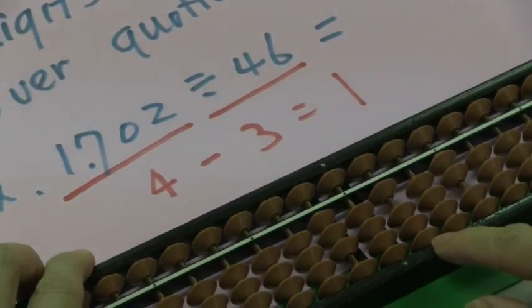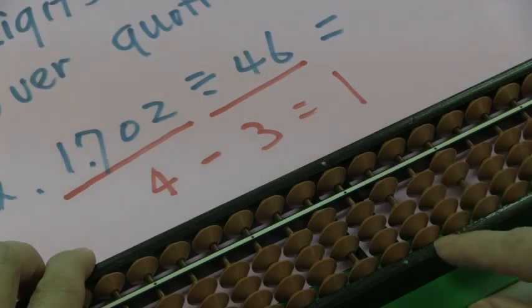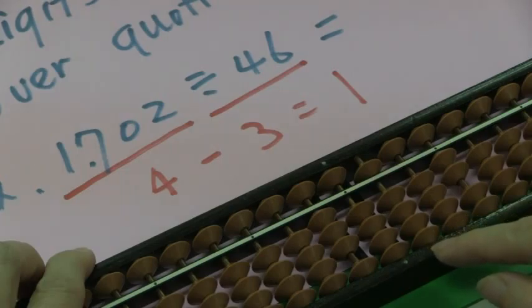Add it back to the remainder, which is 4. 1 plus 4 is 5.